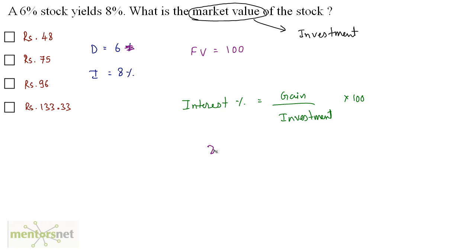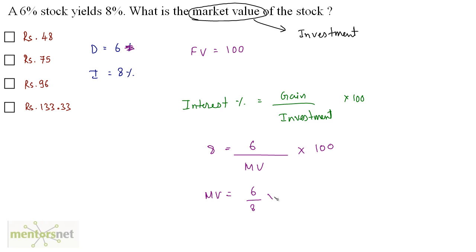We have the interest percentage that is 8. It equals the gain, which is the income on the shares — that is the dividend. If the face value is 100, the dividend is Rs. 6. So, 6 is the gain upon the investment, which is the market value. MV = 6/8 × 100 = 75 rupees. Option B is the correct answer.